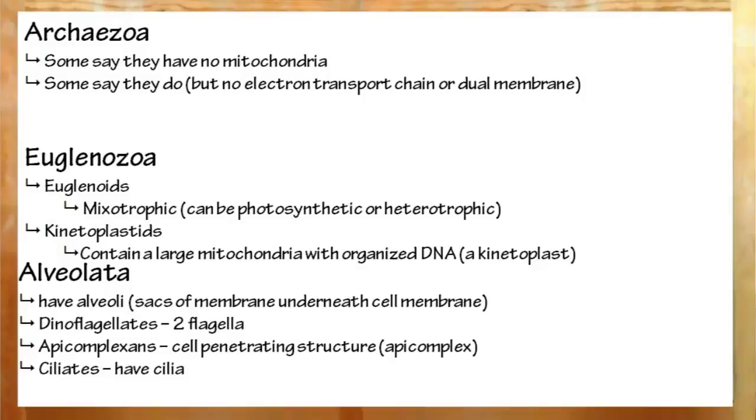Next up, the alveolata. Now, all of these have alveoli, hollow sacs underneath the membrane. And here we have the dinoflagellates, which have two flagella, are brownish-red, and perform photosynthesis. The AP complexins, which have the AP complex structure, which allows them to penetrate cells.